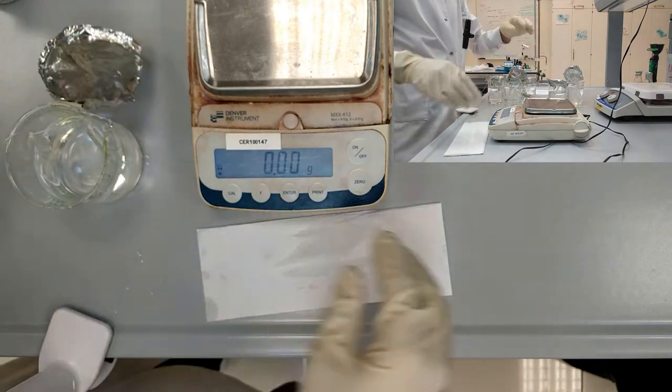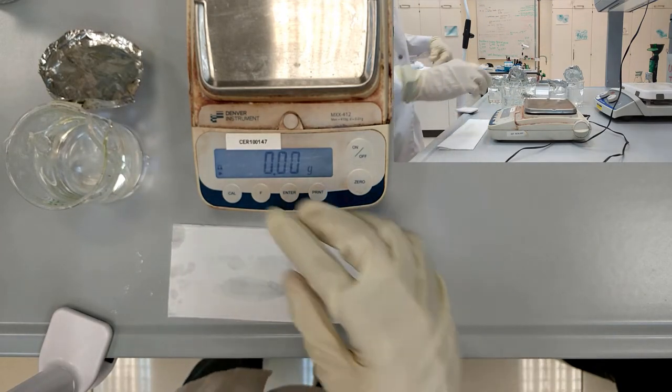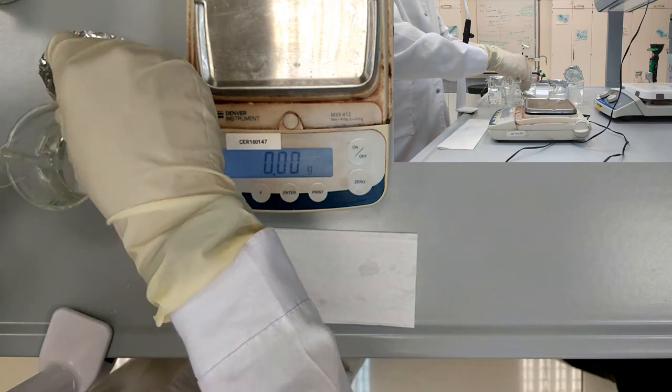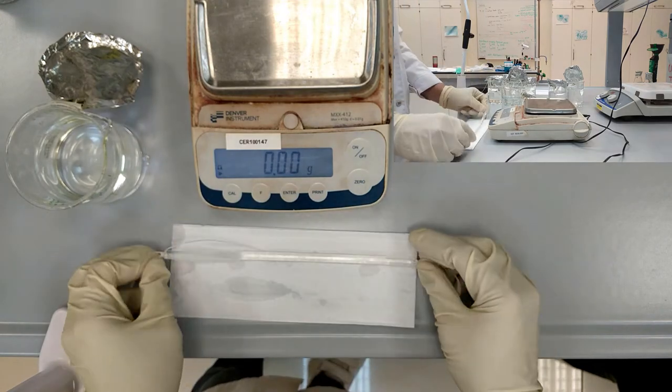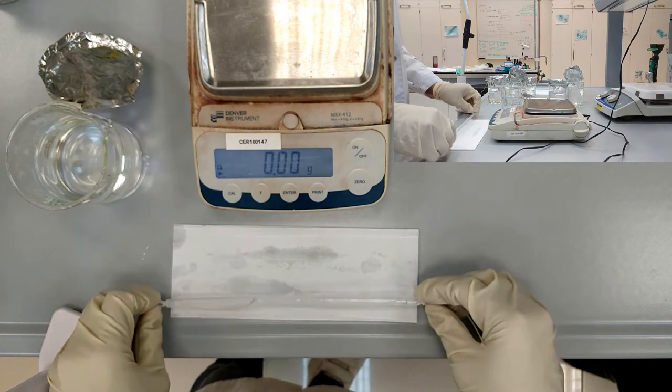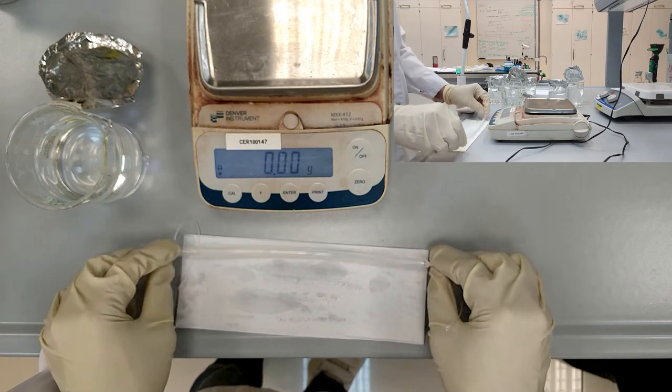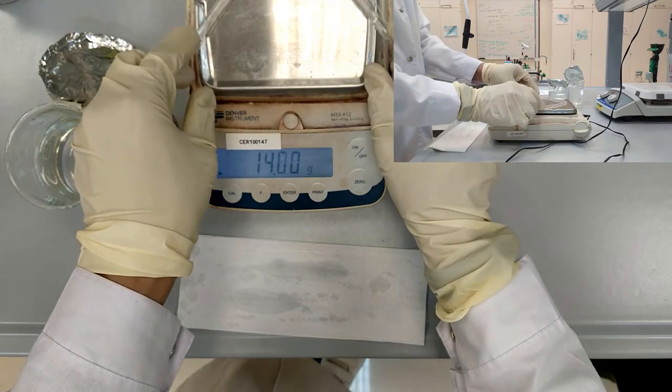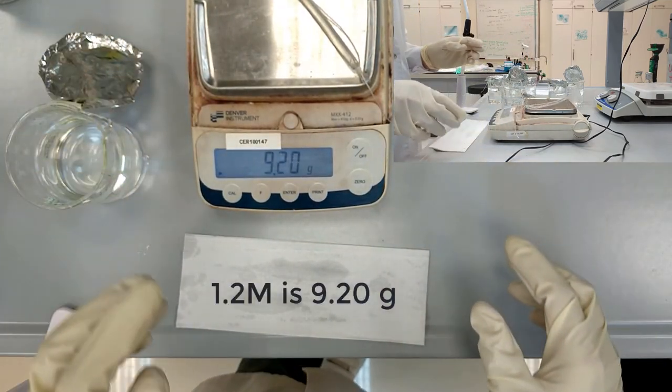Now we take the tube with 1.2 molar concentrated glucose inside. This one was put in the water. Its mass is 9.2 grams.